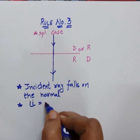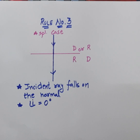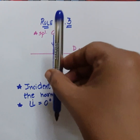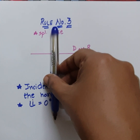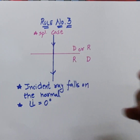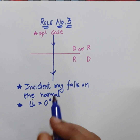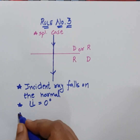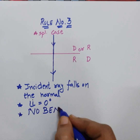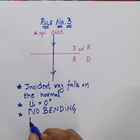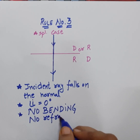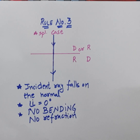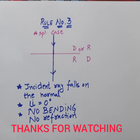In this special case, angle i is equal to zero degrees, because the angle i is the angle between the normal and the incident ray. Since the normal and the incident ray are on the same line, the angle between them is zero degrees. Many students confuse it with 90 degrees, but it is zero degrees. When angle i equals zero degrees, there will be no bending of light — no refraction. I hope you have learned how to draw these three rules, of which rule number one and two are important. We will be taking up the next ray diagrams in the next video. Thank you for watching, students.